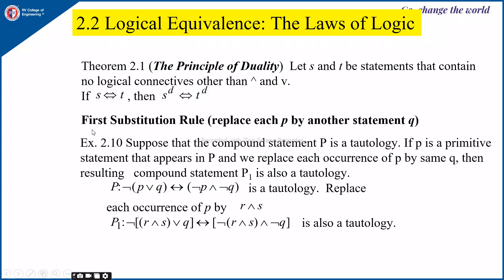Next is the substitution rule. There are two substitution rules. The first substitution rule: suppose compound statement P is a tautology. If small p is a primitive statement that appears in P and we replace each occurrence of p by the same statement Q, then the resulting compound statement P₁ is also a tautology. For example, if ¬P∨Q ↔ ¬P∨¬Q is a tautology, replacing each P by R∧S also yields a tautology.